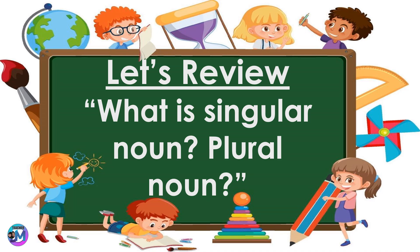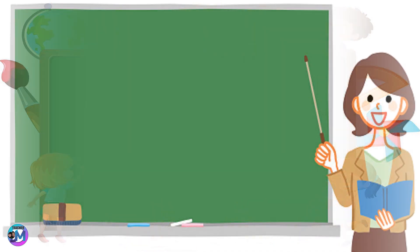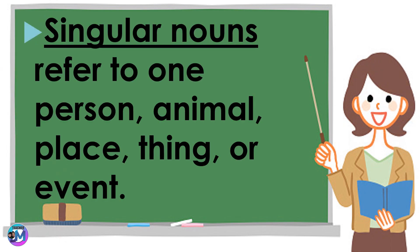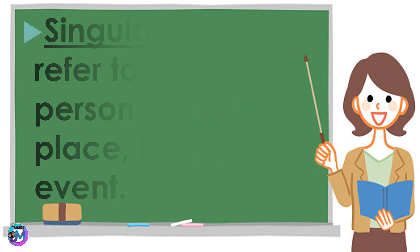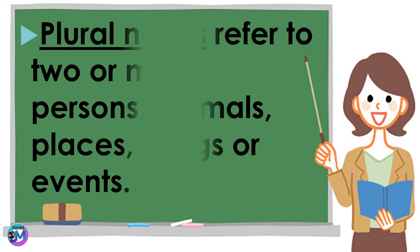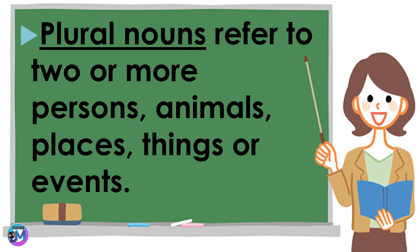What is a singular noun? How about a plural noun? Singular nouns refer to one person, animal, place, thing, or event. While plural nouns refer to two or more persons, animals, places, things, or events.